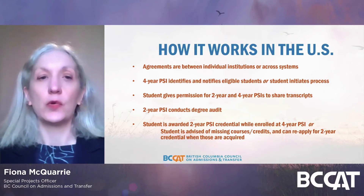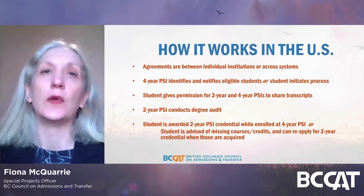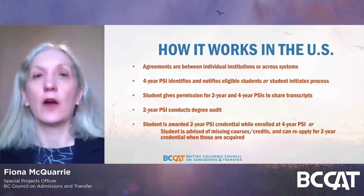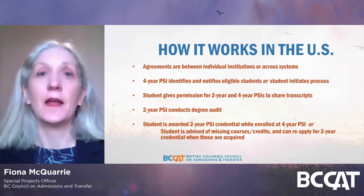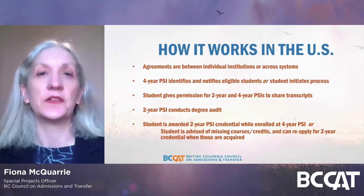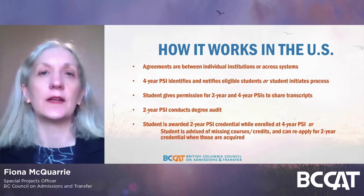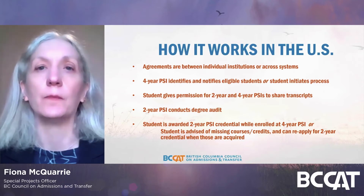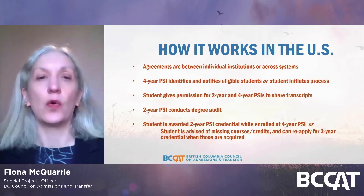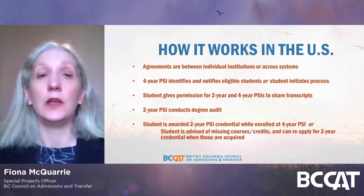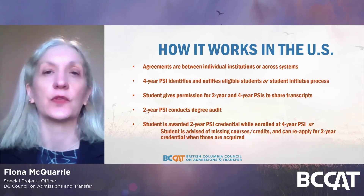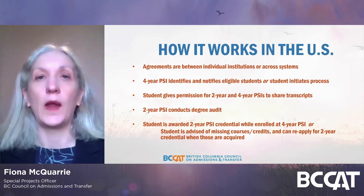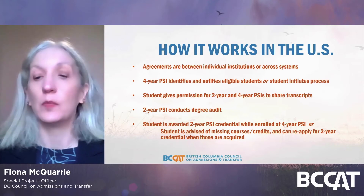The transcripts go to the two-year institution, which then conducts a degree audit to see if the student has completed the requirements for the associate degree. If they have, they are awarded a two-year credential. If they haven't, the two-year institution does advising work to identify the missing courses or credits needed, and the student can reapply when those are completed. One additional feature of many of these systems is that this whole process occurs at no cost to the student — fees like transcript ordering or graduation applications are typically waived.